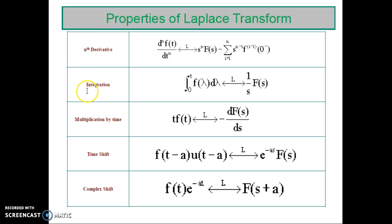The next important property is the integration property. Integration from 0 to infinity of f of lambda into d lambda, by taking the Laplace, results in 1 upon s into f of s. The next important property is the multiplication property: multiplication of a time domain sequence by t in the time domain results in minus d by ds of f of s in the s domain.